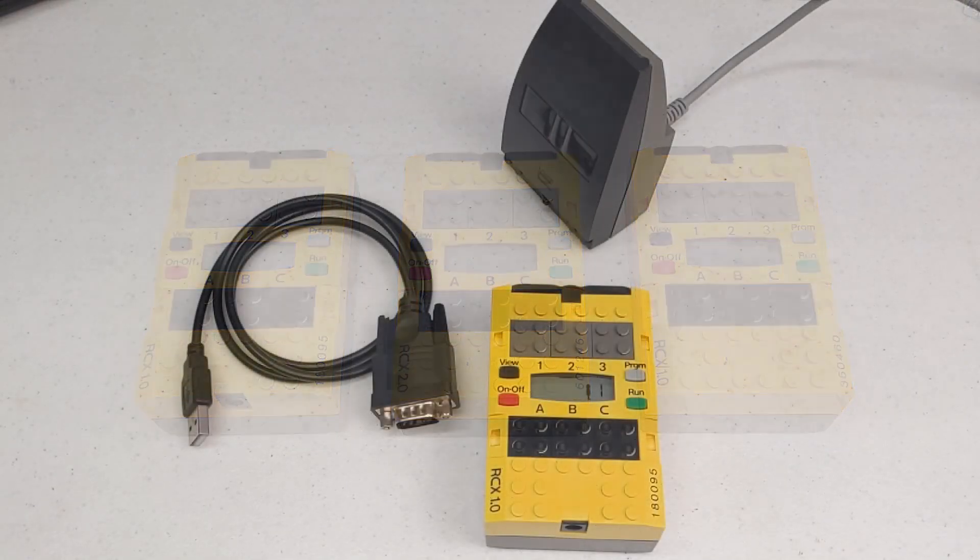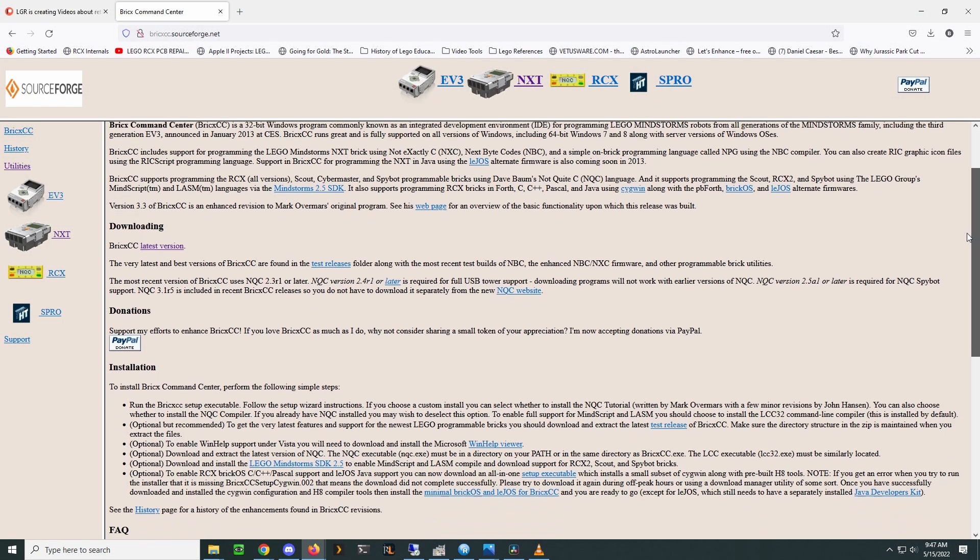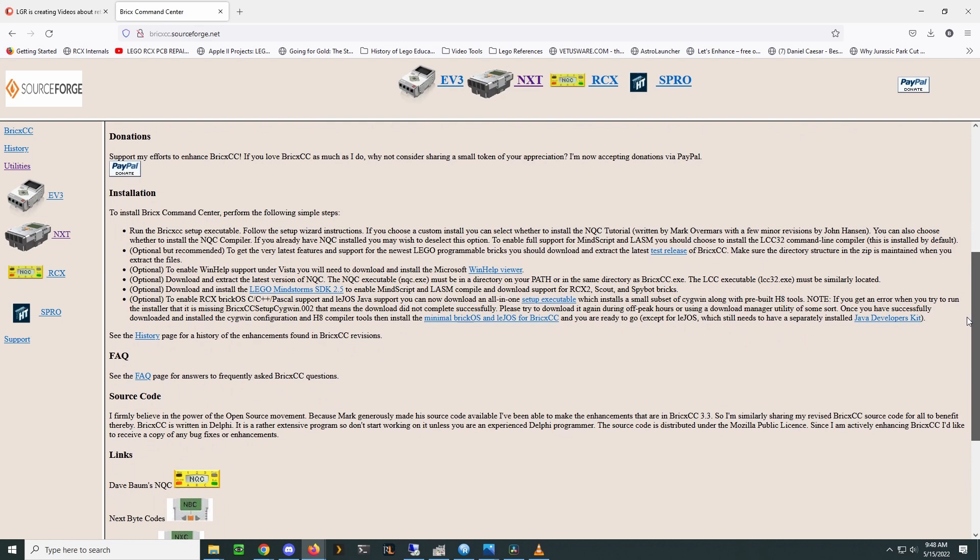You'll need the serial version of the IR tower, a USB to serial adapter if your PC doesn't have an onboard port, and third-party software such as BrickX Command Center. I'll link these in the description below.